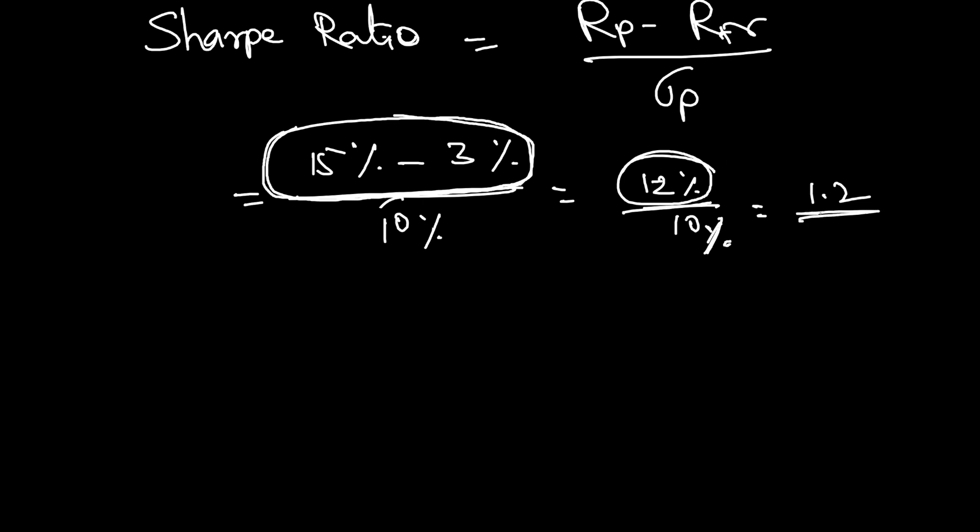That means for one unit of risk, the returns that you can get is 1.2. So higher it is, better.